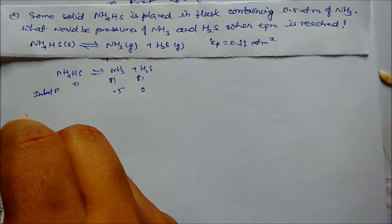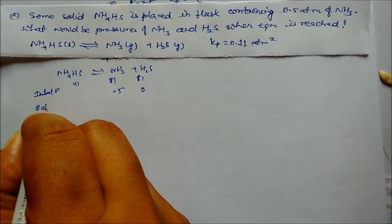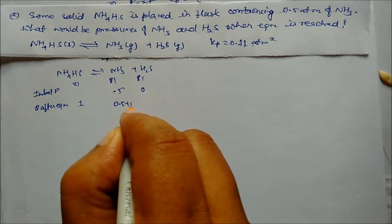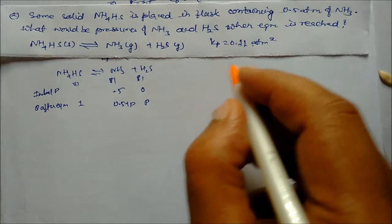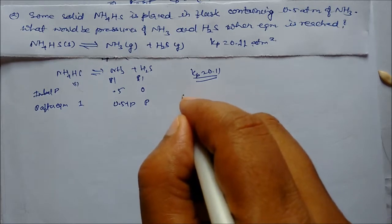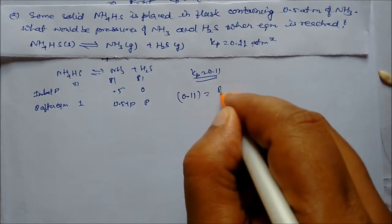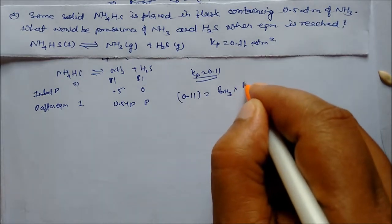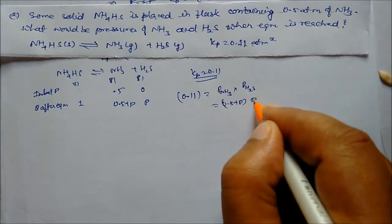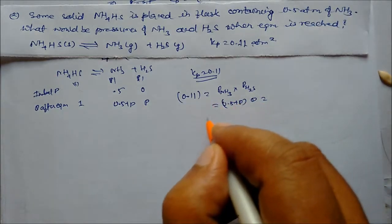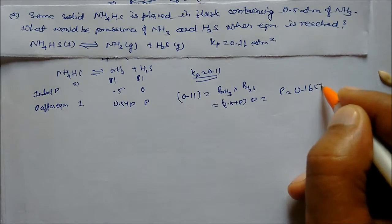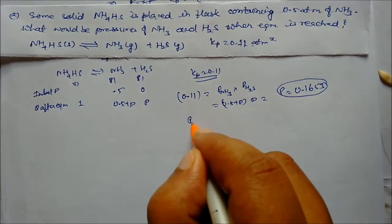Initially H2S pressure is zero. At equilibrium, pressure of ammonia is 0.5 + P and pressure of H2S is P. Kp is given as 0.11, so we write: 0.11 = (0.5 + P) × P. Solving this equation gives P = 0.1653 atm.